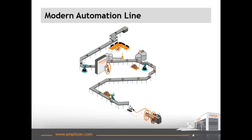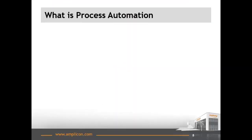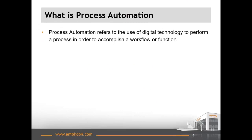Let's take a look at where manufacturing businesses start out. When I say process automation, what do I mean? The official definition is: process automation refers to the use of digital technology to perform a process or processes in order to accomplish a workflow or function. But in reality, it is purely automating a process that is normally done by us, a human.